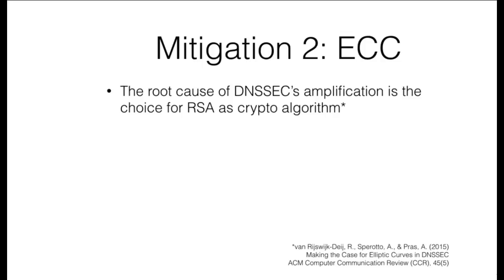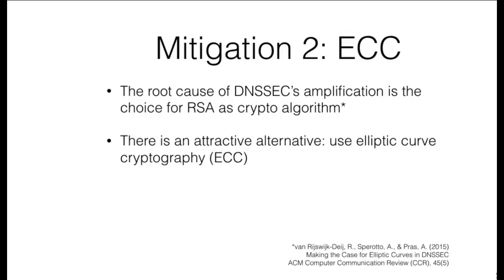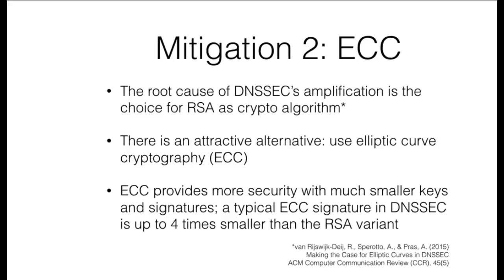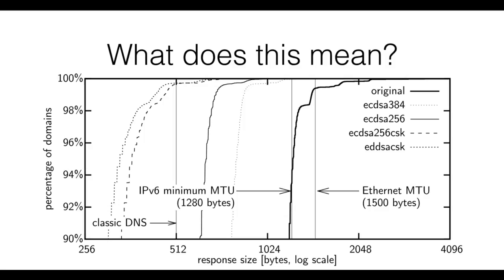Luckily, there is another approach to mitigating the amplification potential in DNSSEC. We argued in a study from 2015 that the root cause of the amplification in DNSSEC is the choice of RSA as the default and only mandatory signing algorithm. Luckily, there is an attractive alternative: the use of elliptic curve cryptography. ECC algorithms can yield much smaller signatures, yet from a cryptographic strength point of view, these are much more secure than RSA signatures. So what would it mean for DNSSEC if we switched from RSA to an elliptic curve algorithm?